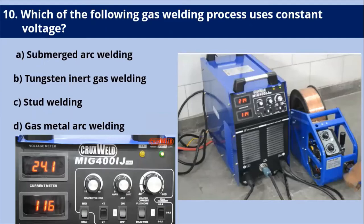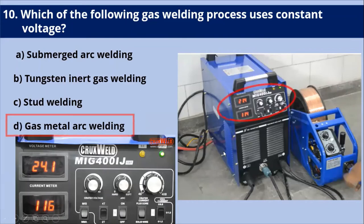Next question: which gas welding process uses constant voltage? Generally, submerged arc welding, TIG welding, or stud welding do not use a constant voltage source. But gas metal arc welding (GMAW) uses constant voltage power sources — the arc voltage is established by setting the output voltage on the machine. So gas metallic arc welding uses constant voltage.